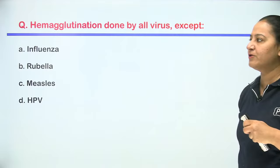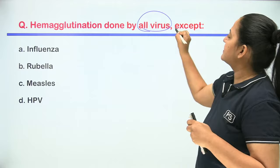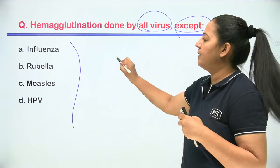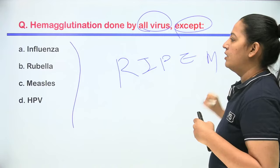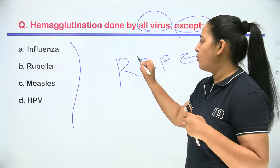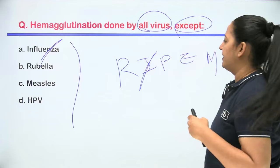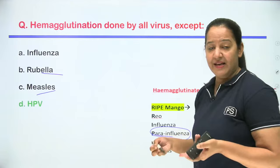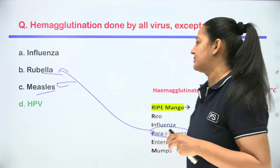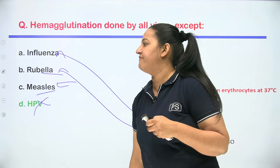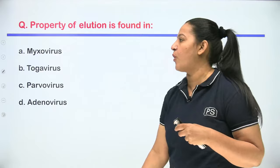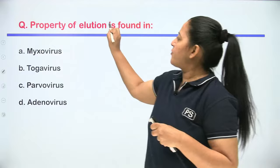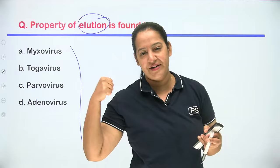PYQ: Hemagglutination is done by all viruses EXCEPT — apply RIPE Mango mnemonic. HPV is not in RIPE Mango, so HPV is the answer. Note: Measles and Rubella fall under Parainfluenza. PYQ: Property of elution is found in which virus? Only one virus shows elution — Myxovirus. This is a repeated PYQ.